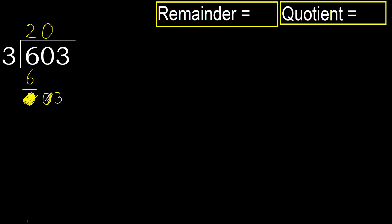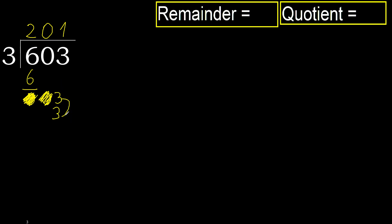Eliminate 0 — bring down here. 3. 3 multiplied by 2 is 6, which is greater. Multiply by 1 is 3 — it's not greater. Okay. Subtract: 3 minus 3 is 0.